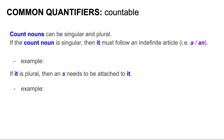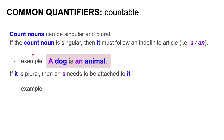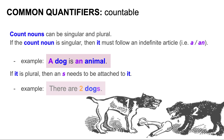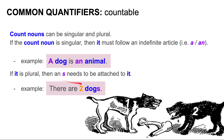Count nouns can be either singular or plural. If the count noun is singular, then it must follow an indefinite article — that is, a or an. For example, a dog is an animal. Both dog and animal are count nouns. If the count noun is plural, then an S needs to be attached to it. For example, there are two dogs — plural.